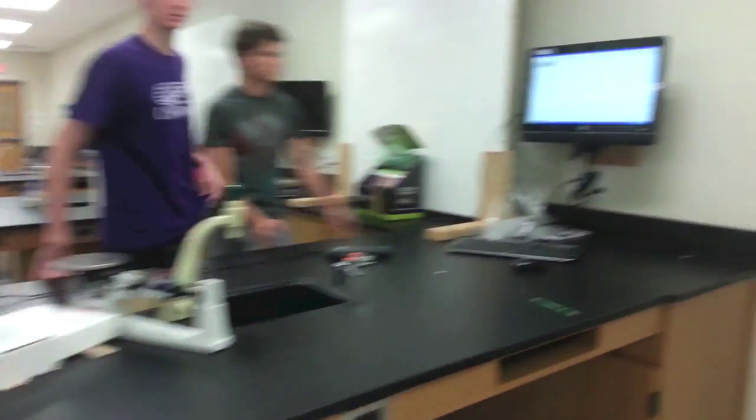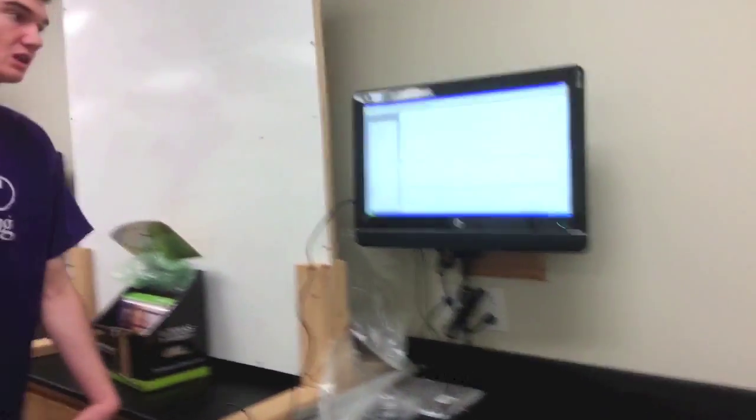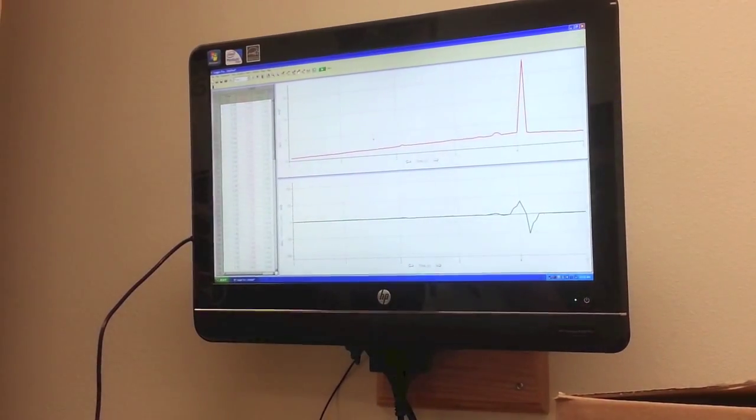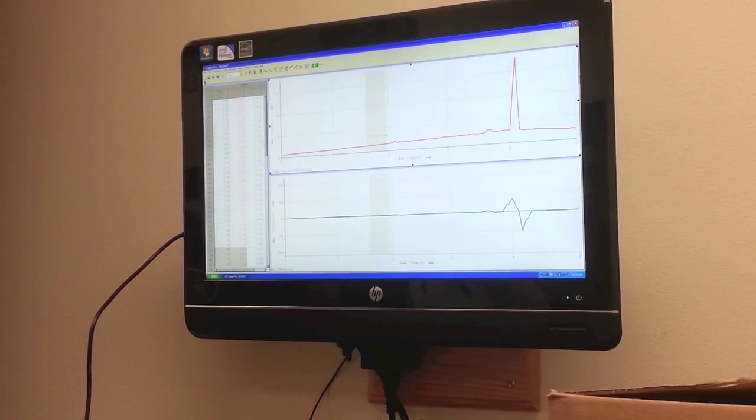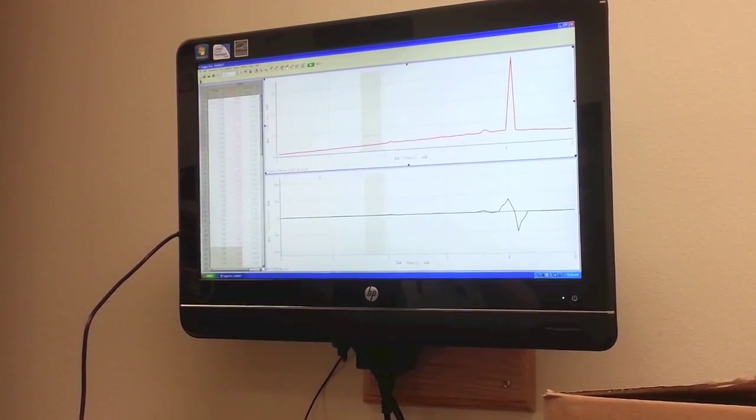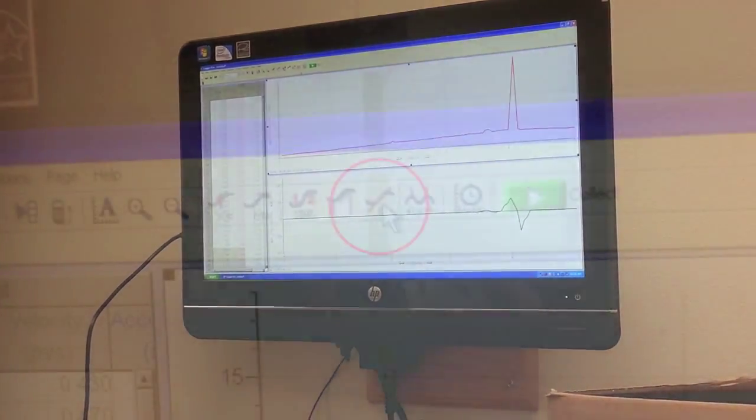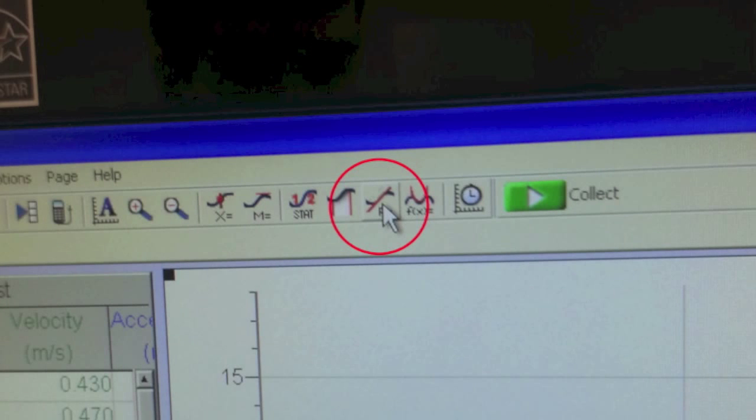Okay, so in a velocity versus time graph, I want to try and have the slope constant. So you'll highlight a constant slope, which would be right there. Then you're going to go ahead and click the linear fit. It's kind of like a curve with a tangent line running through it.